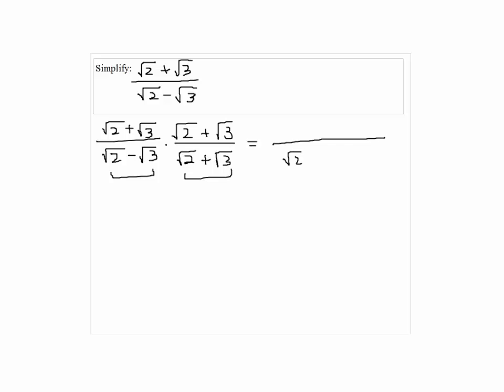So we have square root of 2 squared minus square root of 3 squared. And on top, we have square root of 2 plus square root of 3 squared.